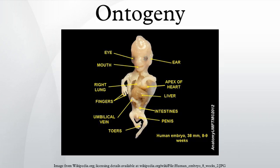Ontogeny pertains to the developmental history of an organism within its own lifetime, as distinct from phylogeny, which refers to the evolutionary history of a species. In practice, writers on evolution often speak of species as developing traits or characteristics. This can be misleading. While developmental processes can influence subsequent evolutionary processes, individual organisms develop, while species evolve.